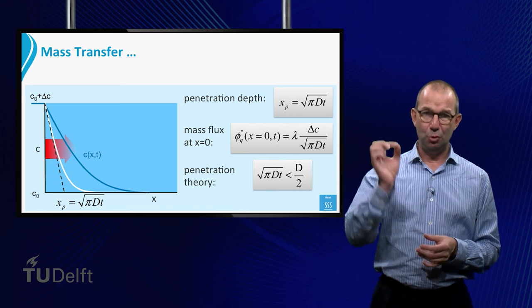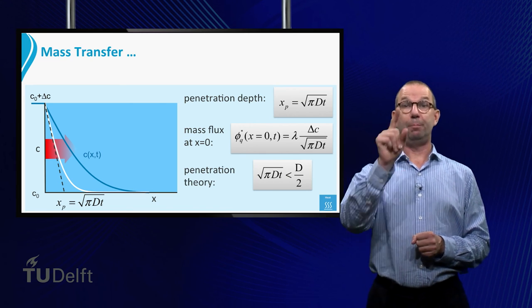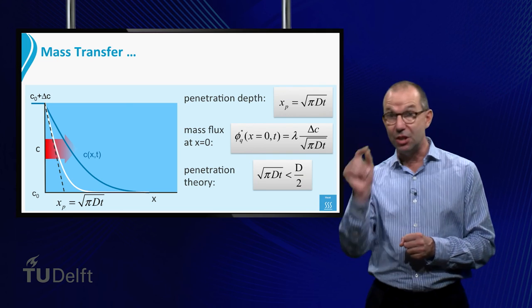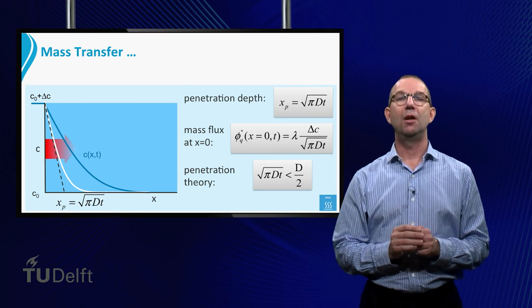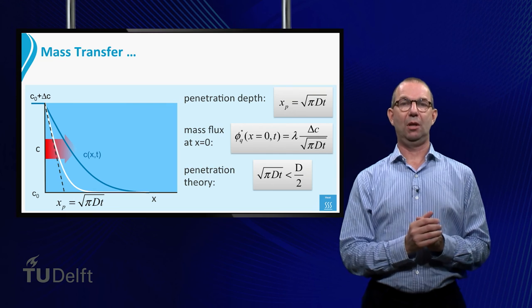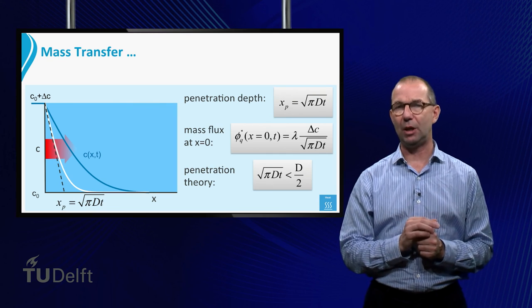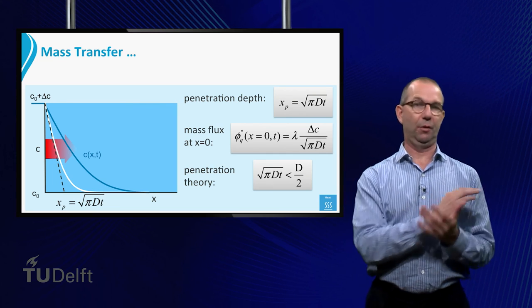But do be careful with your notation. The d of plate thickness and the D of diffusion coefficient should be clearly distinguished. Being sloppy with these makes you calculate all kinds of nonsense.